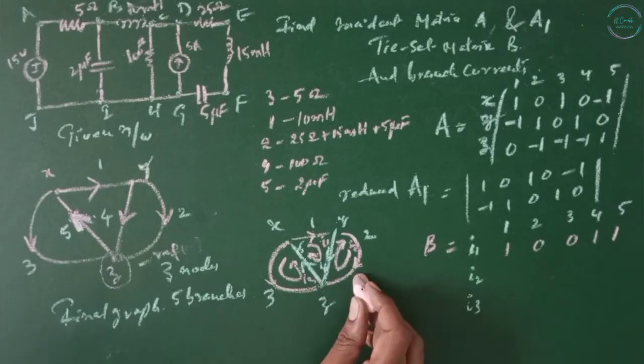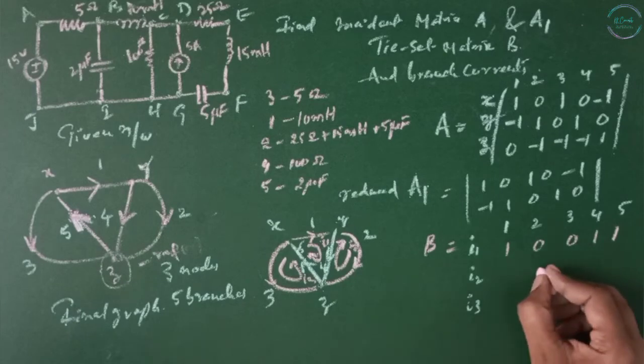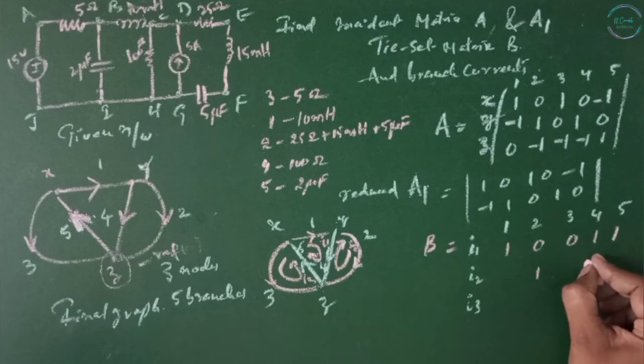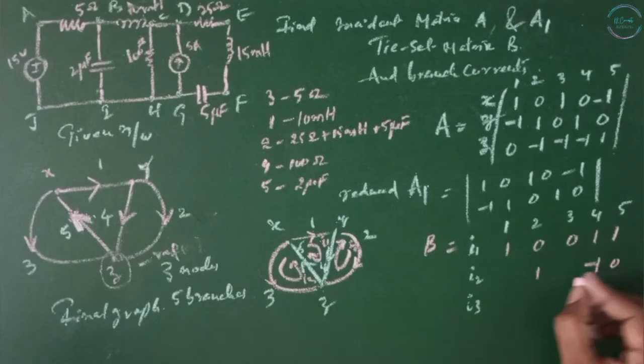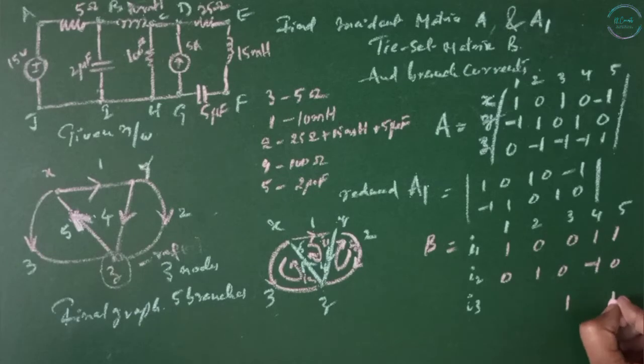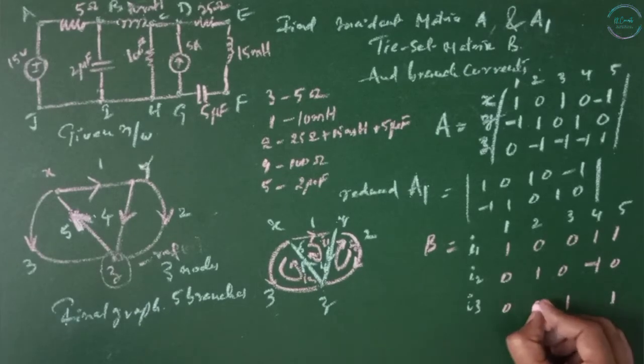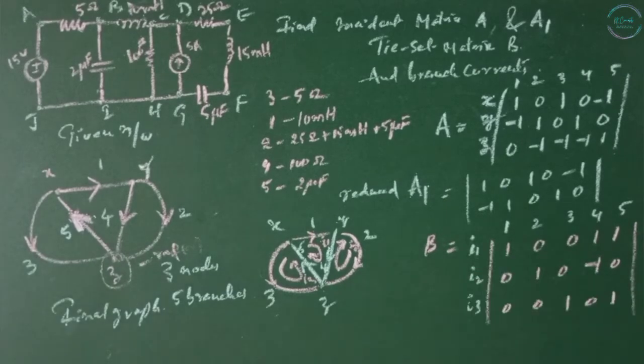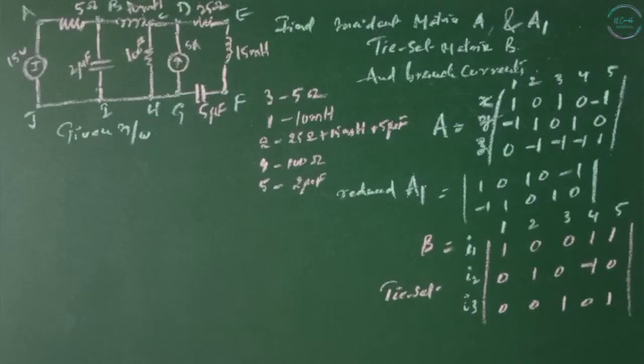Now I2 loop: 2 and 4 are connected and 2 is in the same direction of the loop and 4 is in opposite direction of the loop and 5 is not connected, 3 is not connected, 1 is not connected. 3 is connected between 3 and 5: 3 is in the same direction, 5 is also in the same direction. The other 3 branches are not connected. This is tie-set matrix.